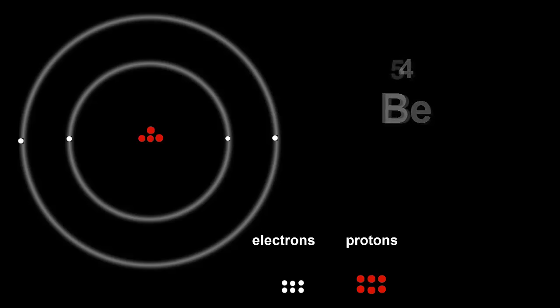Next atom is number 5, boron. It has five protons and five electrons. Two electrons in its first shell, and three electrons in its second shell. Its electron configuration is 2 comma 3.